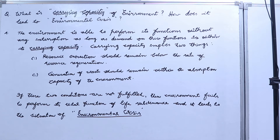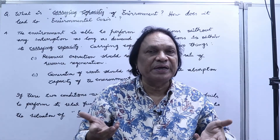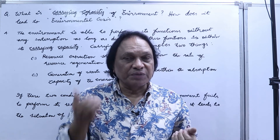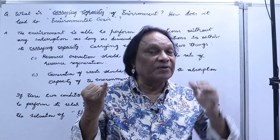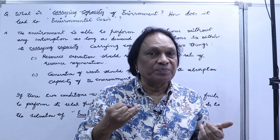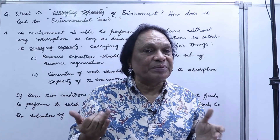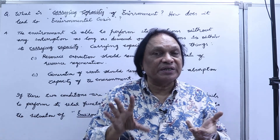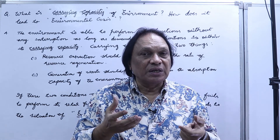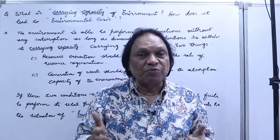If these two conditions are not fulfilled, the environment fails to perform its vital functions of life sustenance and it leads to a situation of environmental crisis. Carrying capacity means the demand should be less than the supply in the environment — we should extract only that much which the environment is able to regenerate, and we should put only that much wastage which the environment can absorb. If these go in the opposite direction, it leads to environmental crisis.